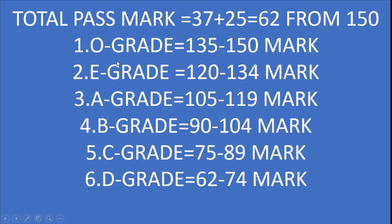Now, the overall grade out of 150: O grade is 135 to 150; E grade is 120 to 134; A grade is 105 to 119; B grade is 90 to 104; C grade is 75 to 89; D grade is 60 to 74. If you score less than 62 it will be considered as a fail mark.